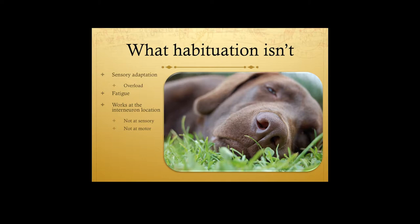Habituation works at the interneuron location. It's not on a sensory neuron, it's not on a motor neuron. You're still detecting those things, but the reaction to that particular stimulus doesn't happen — it doesn't make that jump between the sensory and the motor neurons. It's response-specific, and there's an orienting response decrease.